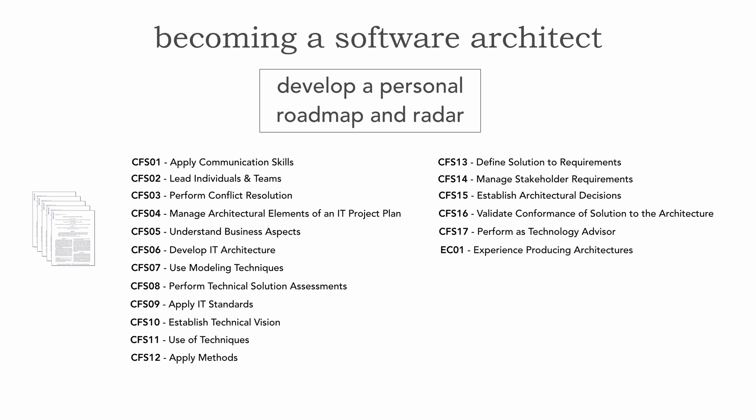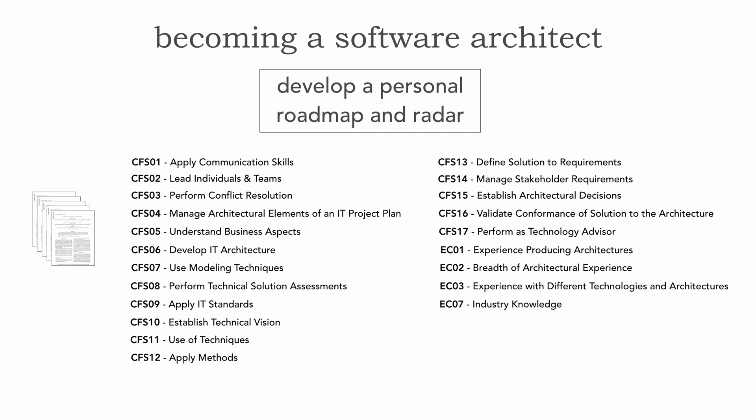Then there are experience skills. EC01 covers experience producing architectures and demonstrating proficiency. EC02 is the breadth of architectural experience, including experience with different technologies and architectures — which I'll talk about in the next lesson, number 88, and which I also referenced in lesson 86 as a core expectation. EC03 and EC07 cover industry knowledge and knowledge of IT trends, and demonstrating where you've leveraged that knowledge. Note that EC04, EC05, and EC06 are not requirements for the first level of software architect, which is why they're not included here.